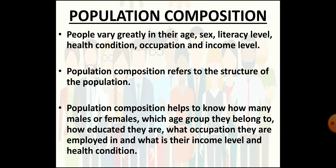Many people have the misconception that a large population always hampers economic growth. This is not always correct. For example, both Bangladesh and Japan are densely populated, but Japan is far ahead in economic growth. So, to study the role of people as a resource, it is necessary to know more about the composition of population. Composition of population refers to the different characteristics of a population in terms of age, sex, literacy level, health condition, occupation and income level.